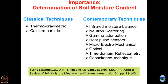These classical techniques have their limitations — they are not very precise, and they are ex-situ techniques, meaning you have to take out the sample, bring it to the lab, and then do the test. There is a school of thought which says you have already disturbed the sample and it is very difficult to maintain the intactness or integrity of the sample. To overcome this, a lot of contemporary techniques have been evolved: the infrared moisture balance, neutron scattering, gamma wave attenuation, and heat pulse sensors.